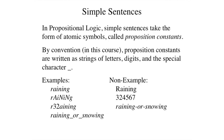Raining beginning with a capital letter is not a proposition because it begins with an uppercase letter. 324567 is not a proposition constant because it begins with a number. Raining-or-snowing fails because it contains the dash or minus character.